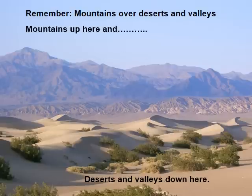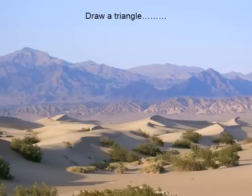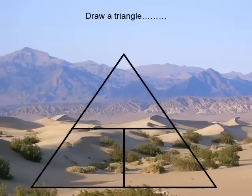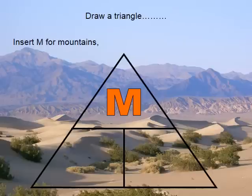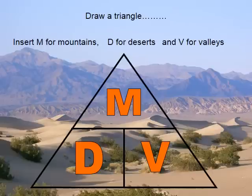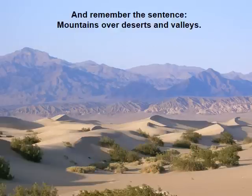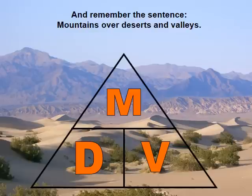So here's where you need your piece of paper and your pencil. If you don't have it, pause the video here and go run and get one. You're going to draw a triangle just like this. So a big triangle and there's going to be a line across horizontally across the middle. So you have a small triangle on top and then a line at the bottom to split the bottom into two different parts. Put an M at the top for mountains, put a D at the bottom left for deserts, and put a V at the bottom right for valleys. And again, remember the sentence, mountains over deserts and valleys. This is what your triangle should look like.